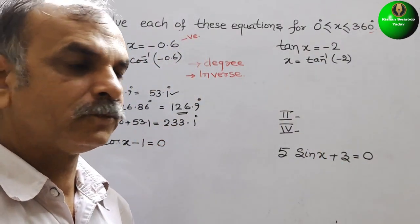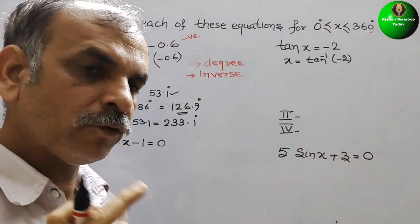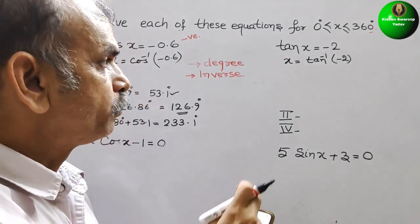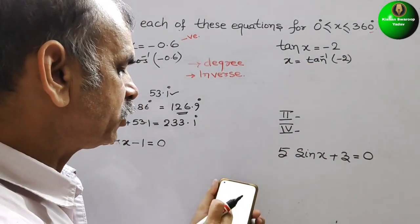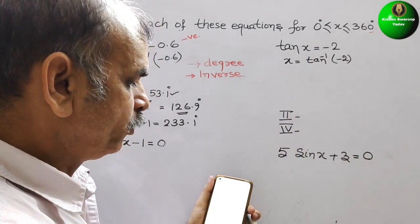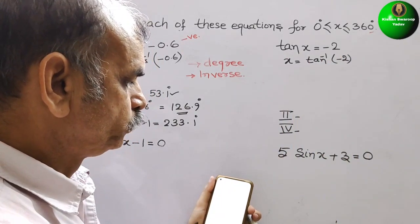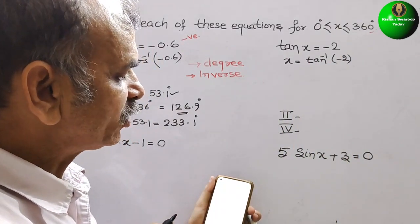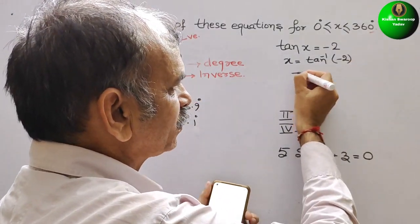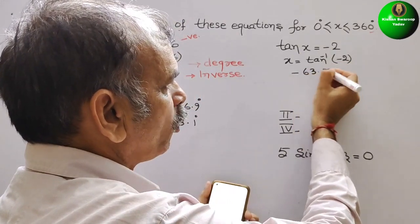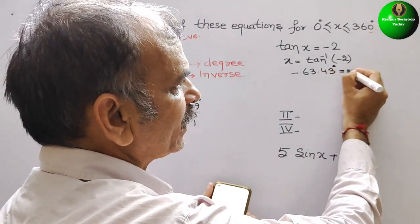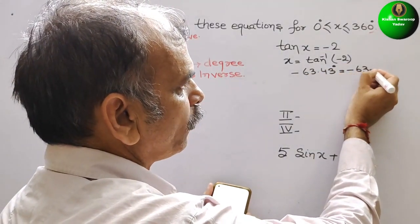We open our calculator. Press tan inverse, then enter -2. We got -63.43°, which is approximately -63.4°.